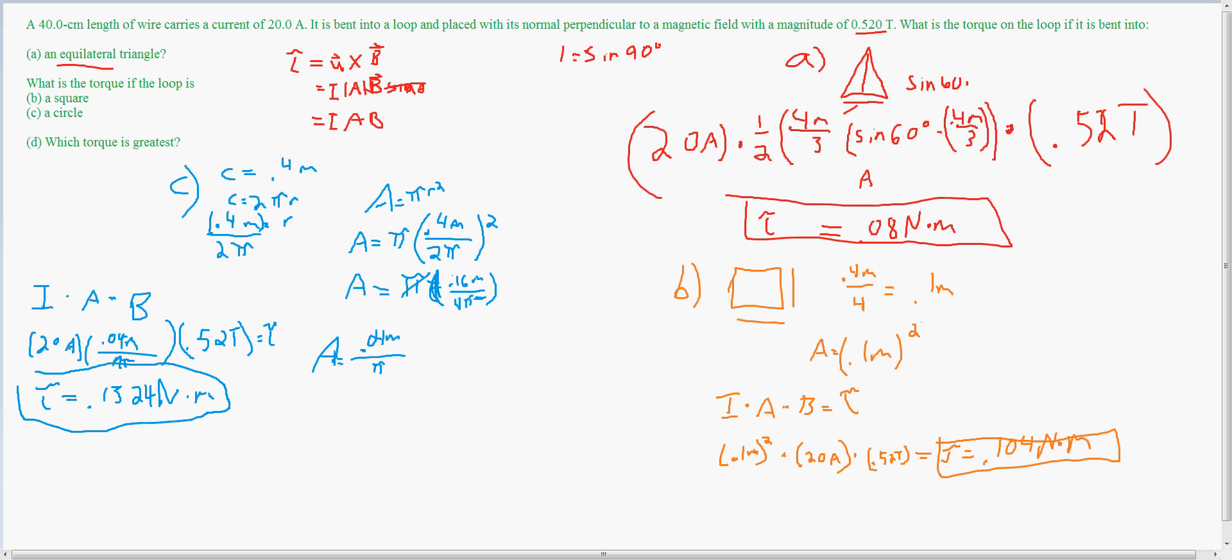And we are asking which one is the greatest. We can just look at each of these. And we have 0.08 over here, 0.104 over here, and 0.134 over here. So the greatest one would be the circle. And there's the answer to the problem.